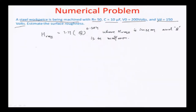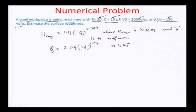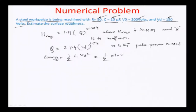The energy delivered depends on resistance, capacitance, operating voltage, and discharge voltage. For mild steel, the empirical relationship is q = 27.4 × W^1.54, where W is the pulse power in kilowatts. The energy is calculated as E = ½CV_D² = ½ × 10×10⁻⁶ × 150² = 0.113 joules.